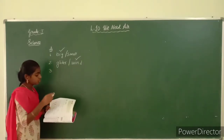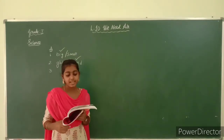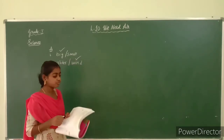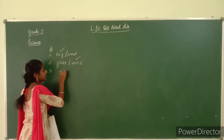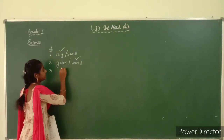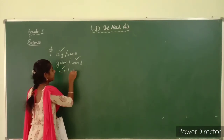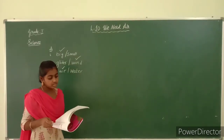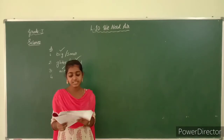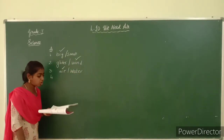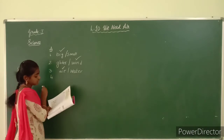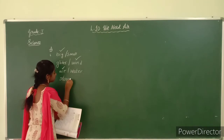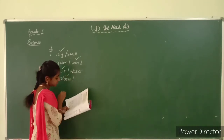Third one: we need air for drying wet clothes, or water for drying wet clothes? We need air. A-I-R. Tick at the spelling 'air'. Fourth one: a very strong wind is known as 'strong' or 'breeze'? A very strong wind is known as strong. Tick at the spelling 'strong'.